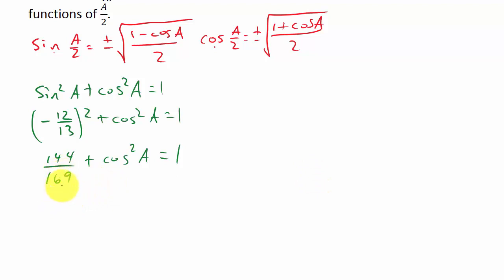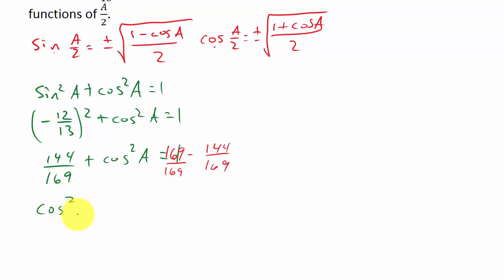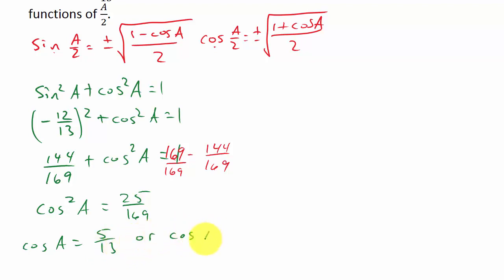Subtracting 144 over 169 from both sides — getting a common denominator of 169, so the numerator is 169 minus 144 — gives cosine squared A equals 25 over 169. So cosine A equals 5 over 13 or negative 5 over 13.